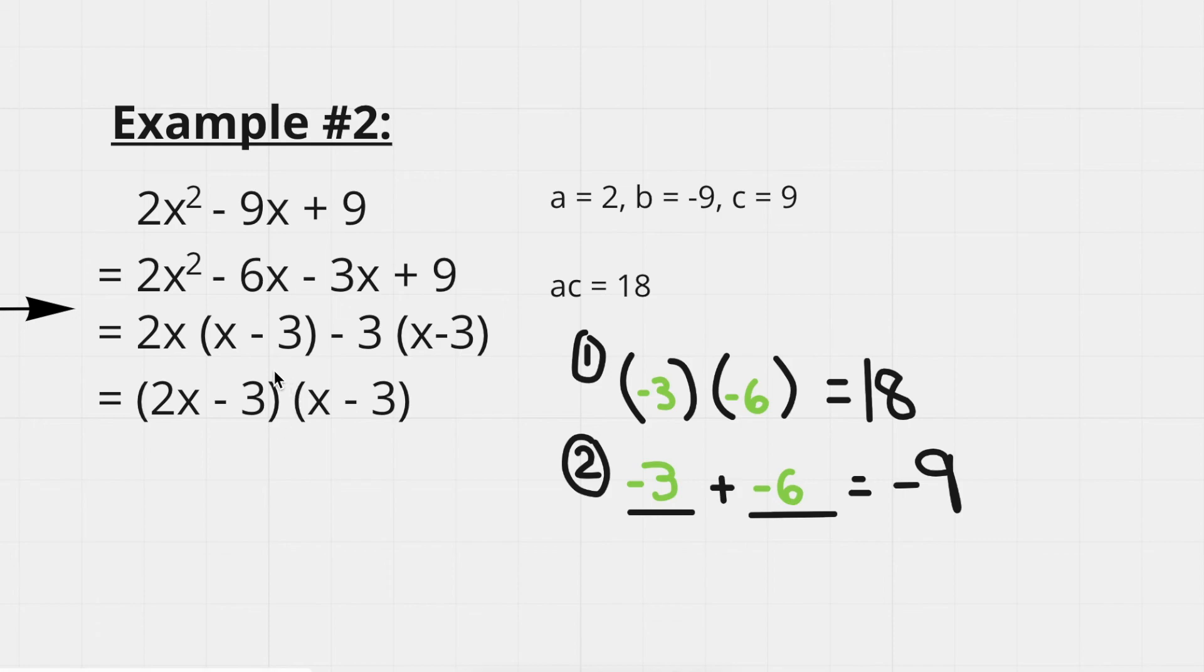As our final factored answer, we're left with 2x minus 3, and x minus 3.